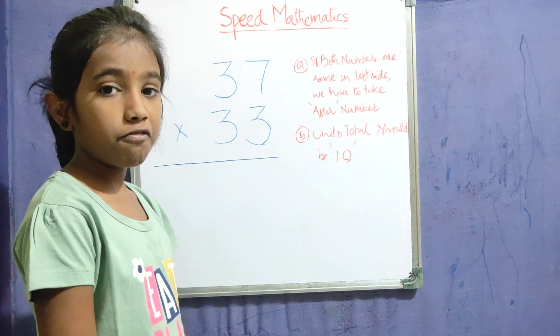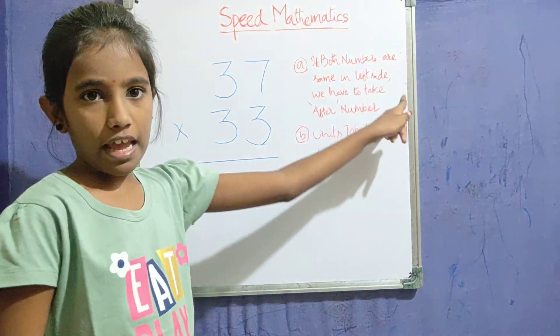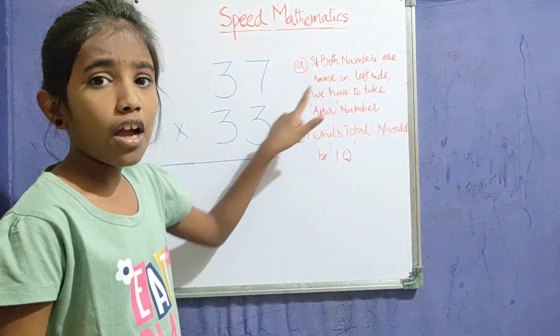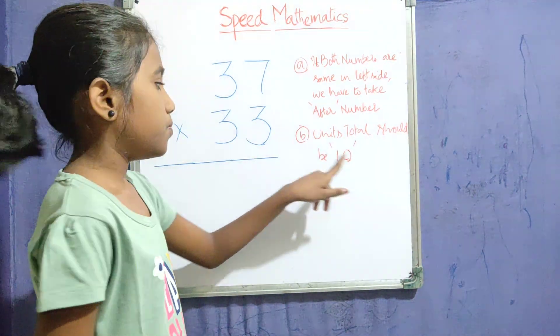There are some rules. First one: if both numbers are the same on the left side, we have to take the next number. Second one: units total should be 10.